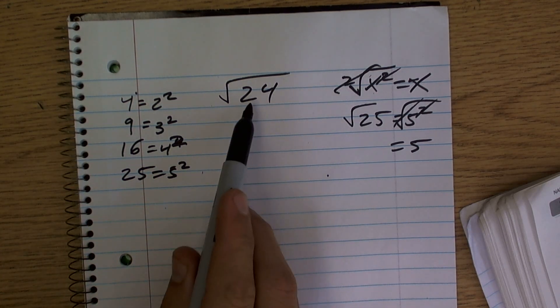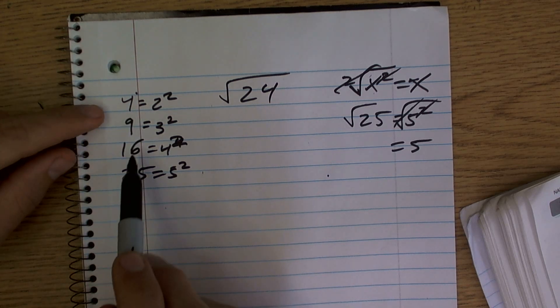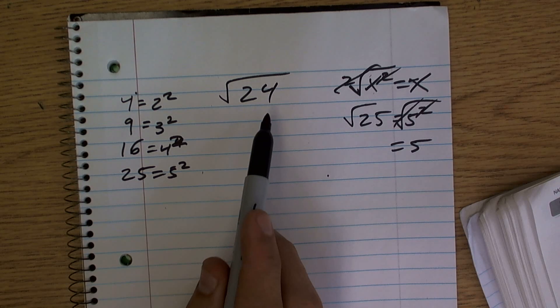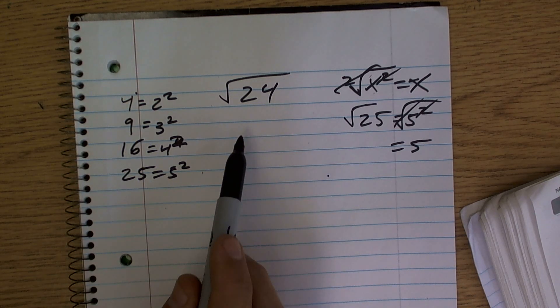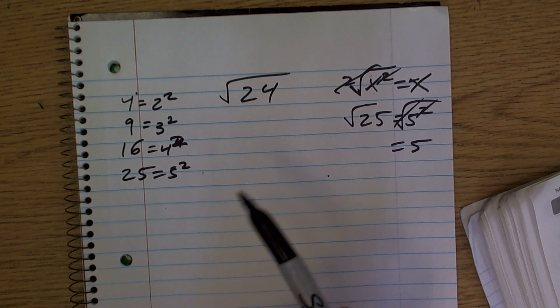So what I want to do is I want to see, can I rewrite 24 as a multiplication of one of these square numbers in there? So can I rewrite 24 as maybe like a product of one of these numbers and another number, as a multiple of one of these numbers?